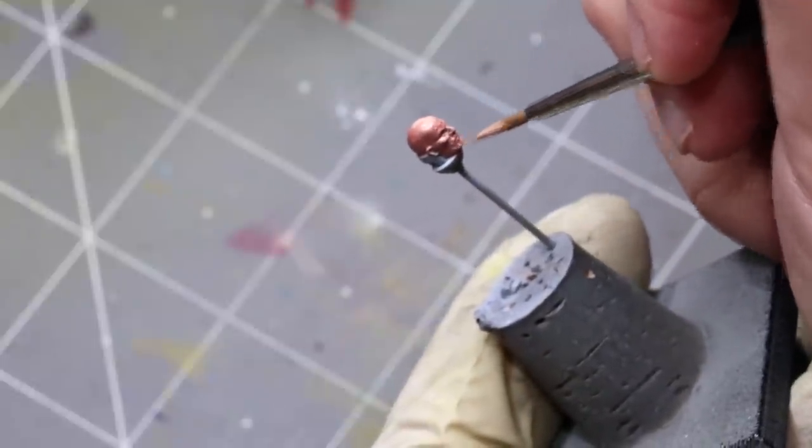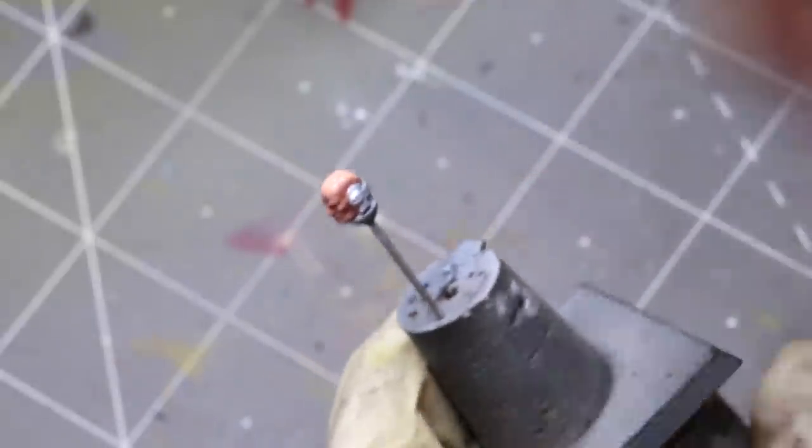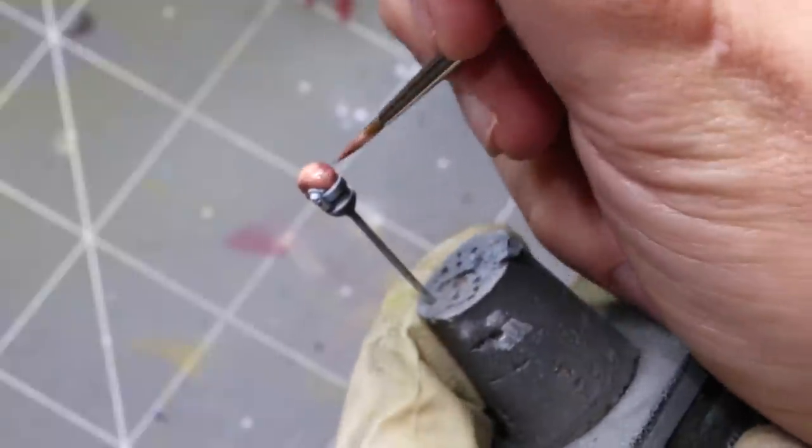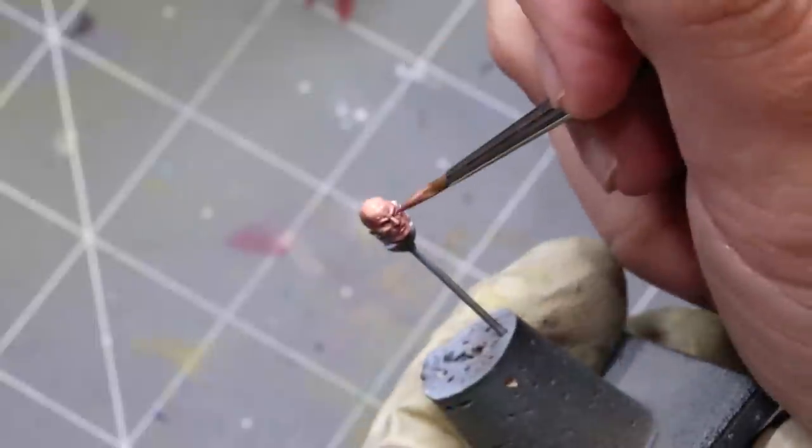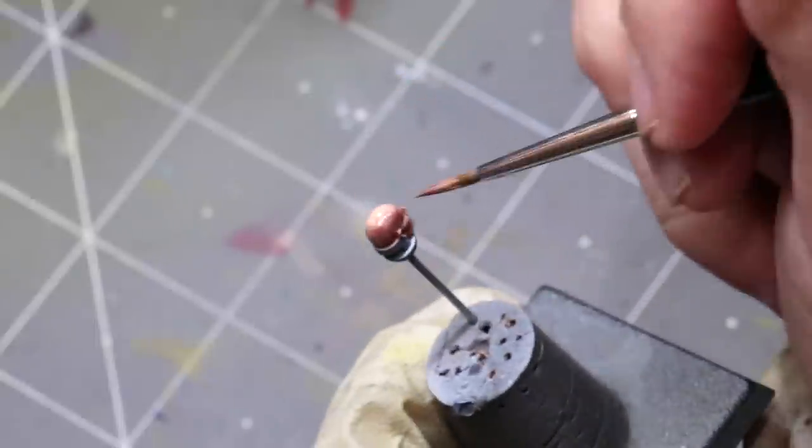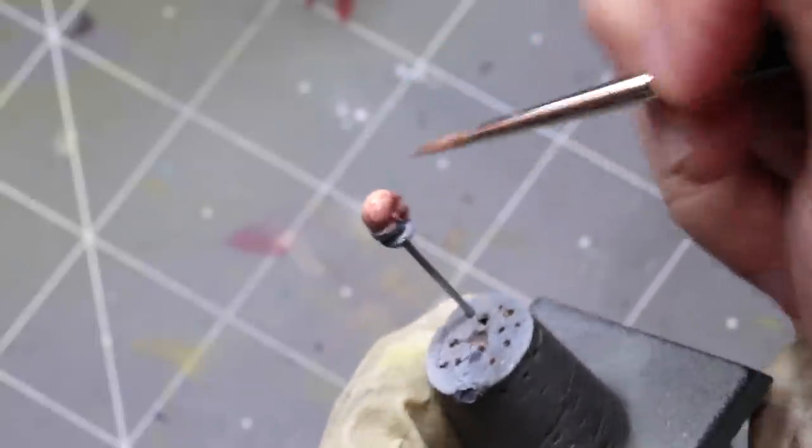Here we're adding in a little bit of the Vallejo Beige Red and beginning to sketch out the initial light areas. As I said in the beginning, I always like to go from a slight angle as opposed to directly from above. I just think it makes it more interesting. I've always been more of a fan of Rembrandt style lighting.